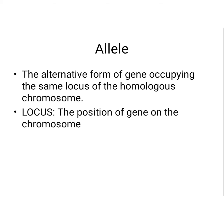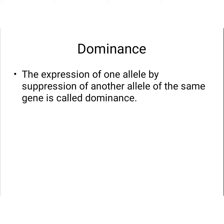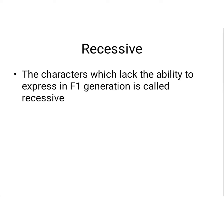What is dominant? In the F1 generation, if A and B are crossed and the character of A is expressed while B is suppressed, the expressed character is called dominant. The expression of one allele by the suppression of another allele of the same gene is called dominance. Dominant characters are expressed in capital letters. The suppressed character in F1 generation is called recessive — characters lacking the ability to express in F1 are called recessive and are written in small letters.